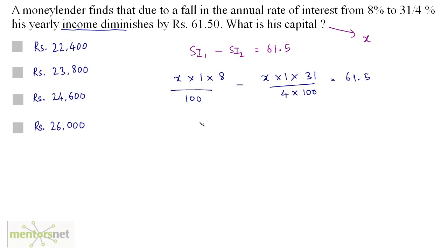So taking 1 by 100 common, we have 1 by 100 here. I have 8X minus 31X by 4. This is 61.5. Now this 100 goes to the right. So this is 61.5 times 100, that's 6150. On the left hand side, I have 8 is 32 minus 31X and that's X by 4. Therefore, X is equals to 6150 times 4. And that is equals to 24,600. So the capital amount of this money lender is 24,600 and that is in option C.